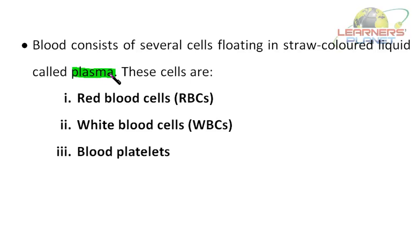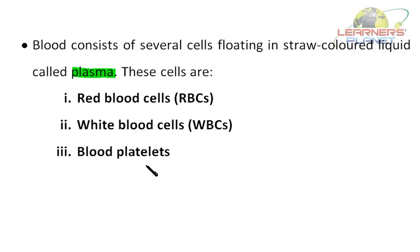The fluid part of blood is called plasma, which is straw-colored. The cells present in the blood are of three types: red blood cells, popularly called RBCs; white blood cells, called WBCs; and blood platelets. One function of the circulatory system is to transport substances around the body in the blood. Blood consists of plasma which contains white blood cells, red blood cells, and platelets.